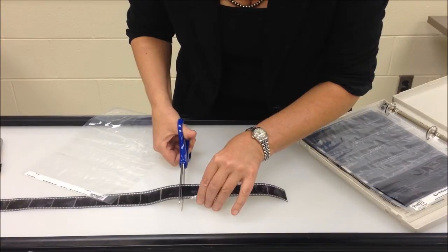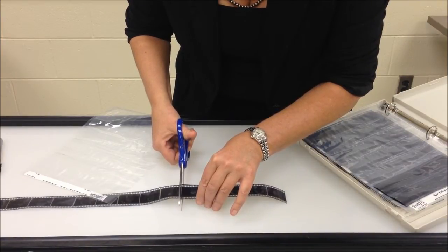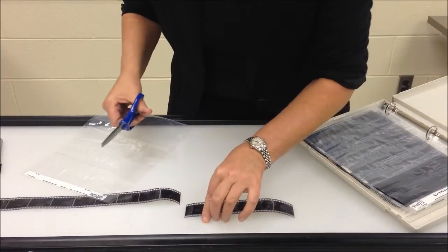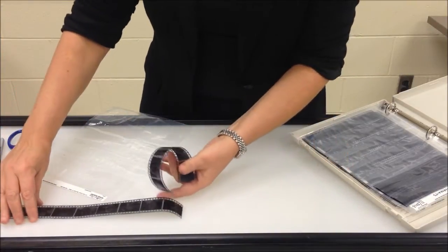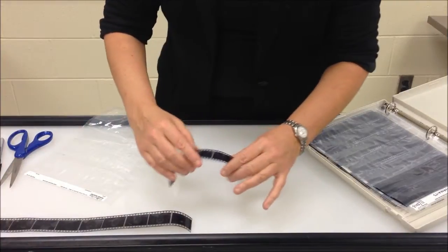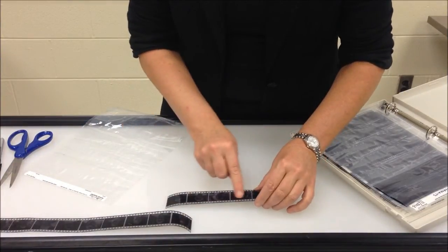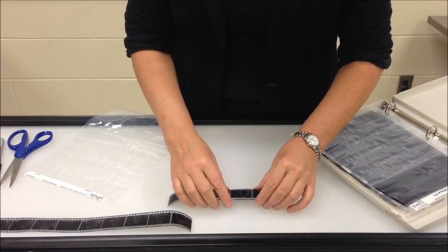Handle the film only at the edges with your fingers. It really wants to roll up after being cut. It's dry and curly. Keep it emulsion side down, reading the top properly.